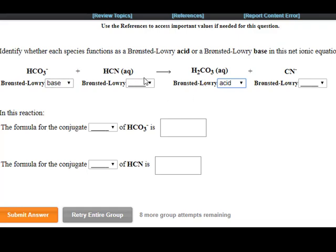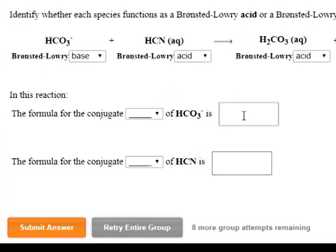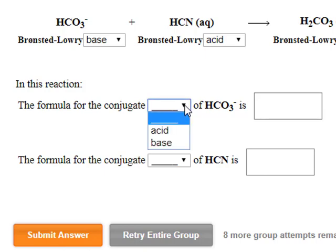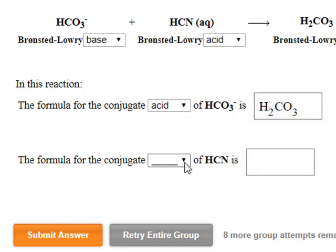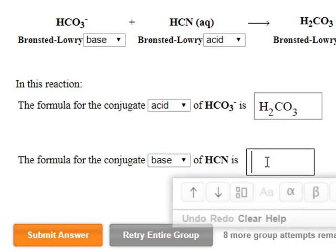Therefore, once we've established an acid or a base with confidence, then we could conclude the other. So the formula for the conjugate acid of HCO3 is H2CO3, and this is the base, which is cyanide.